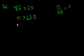And then if we divide both sides by 25, we get n over 25 is greater than 25. So a valid value for n over 25 has to be greater than 25.